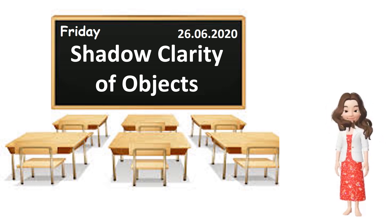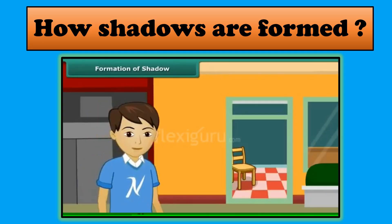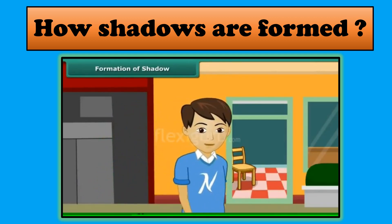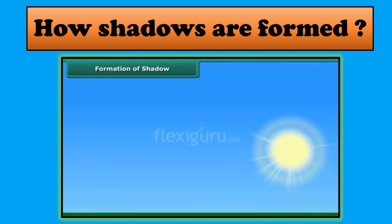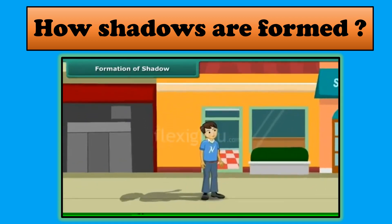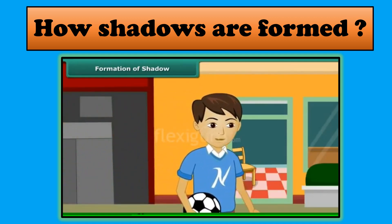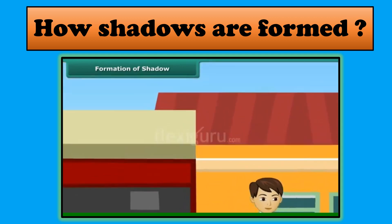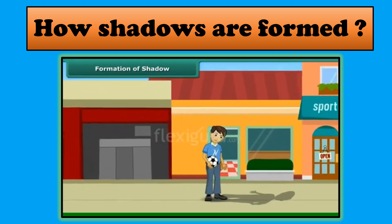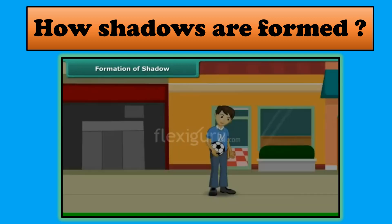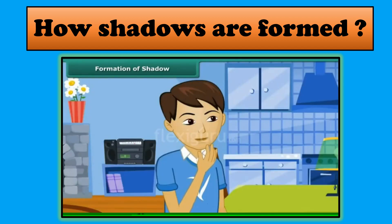Do you know how a shadow is formed? On a Sunday morning, you are on your way to the market to buy some milk. The sun is shining bright on your face. You see your shadow on the ground behind you. The same day in the evening, you are out in the park playing football. The sun's rays fall on your back and you see your shadow on the ground in front of you. After a while, the sun sets. There are no more shadows. You are confused and want to understand when shadows are formed.